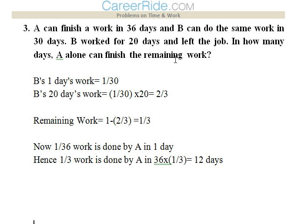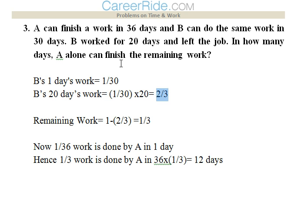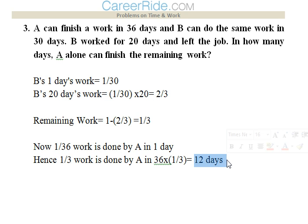Third question: A can finish a work in 36 days and B can do the same work in 30 days. B worked for 20 days and left the job. In how many days can A alone finish the remaining work? B's one day work is 1/30, and B worked for 20 days, so work done by B is 20 into 1/30 = 2/3. Remaining work is 1 minus 2/3 = 1/3. A finishes the whole work in 36 days, so 1/3 work would be done by A in 36 into 1/3, that is 12 days.